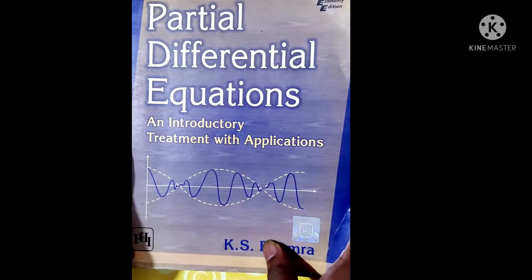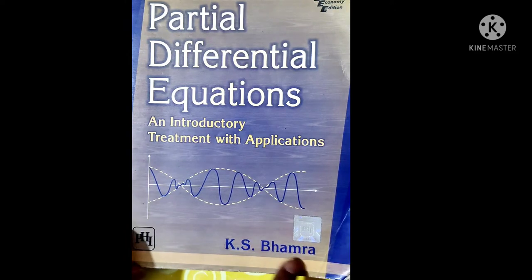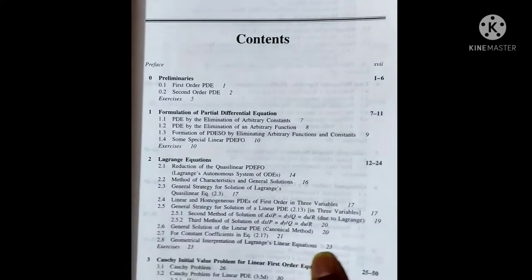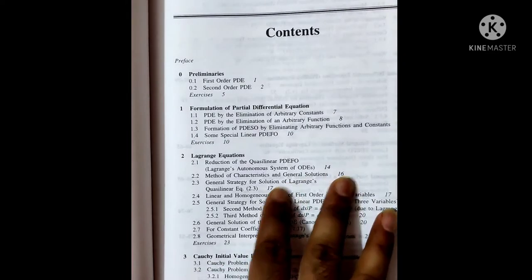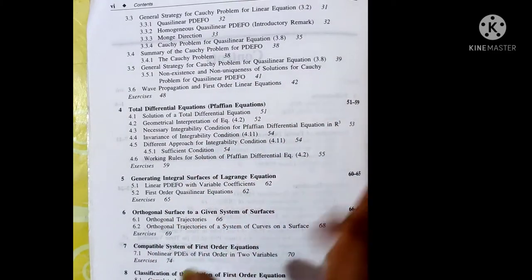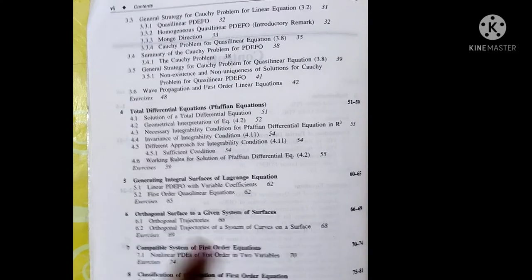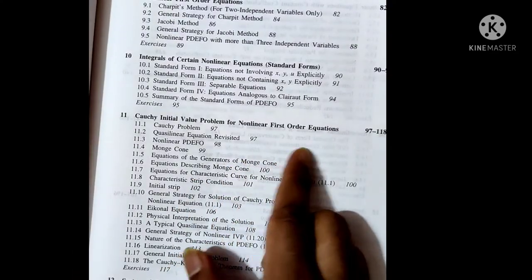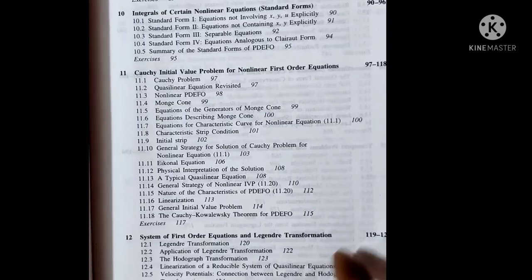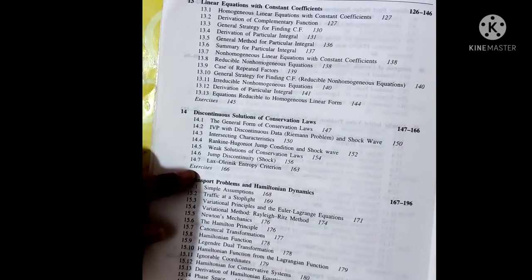The next book is 'Partial Differential Equations: An Introductory Treatment with Applications' by K.S. Bhamra. This covers Lagrange equations, quasi-linear initial value problems, total differential equations, integral surfaces, classification, compatible systems, Cauchy-Kowalevski theorem, and non-linear first order PDEs. If you want to crack any exam like CSIR, UGC NET, or IIT JAM, this is an obvious choice.